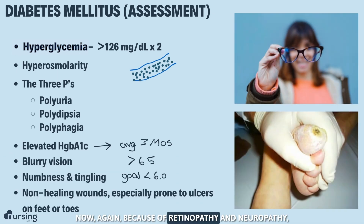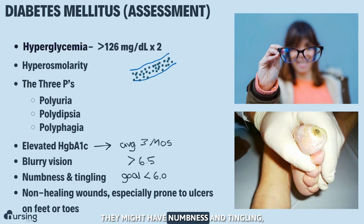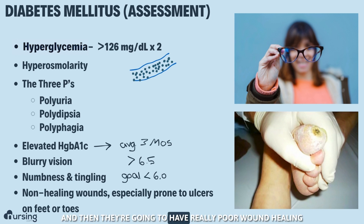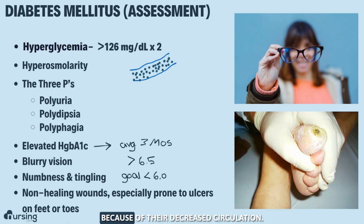Because of retinopathy and neuropathy, we might see blurry vision. They might have numbness and tingling, and then they're going to have really poor wound healing because of their decreased circulation.